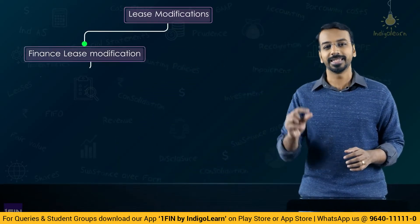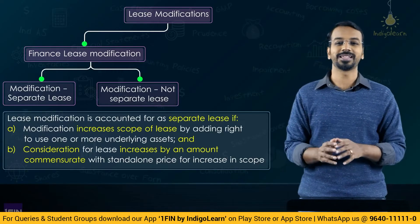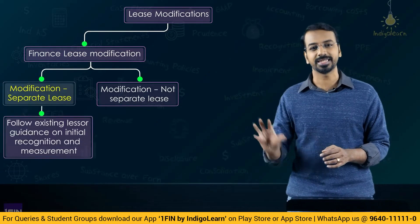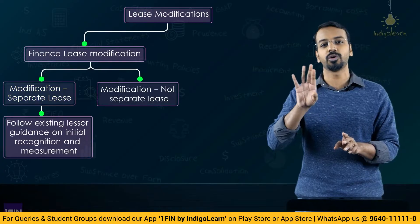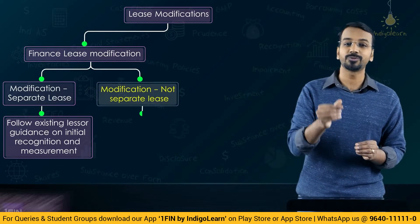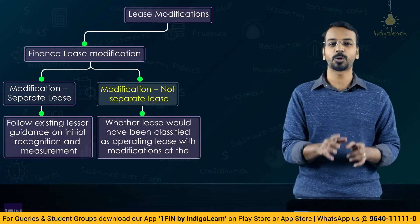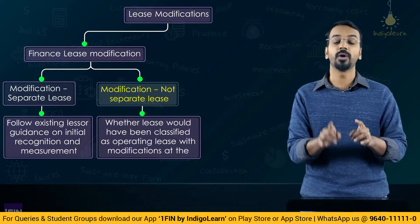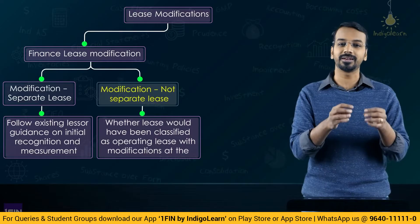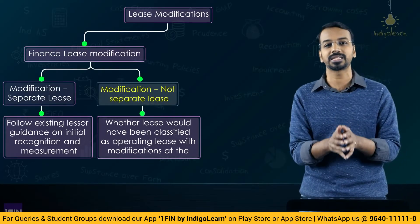In case of a lease modification, you first check whether there is an increase in scope by adding one or more right-of-use assets, and whether the increased consideration is commensurate with the standalone price of the increase in scope. If that condition is satisfied, you account for the lease modification as a separate lease — separately assessing whether it is an operating lease or finance lease. If it is not a separate lease, you then check whether the lease would have been classified as an operating lease if the revised terms and conditions had been applied at the inception of the lease.